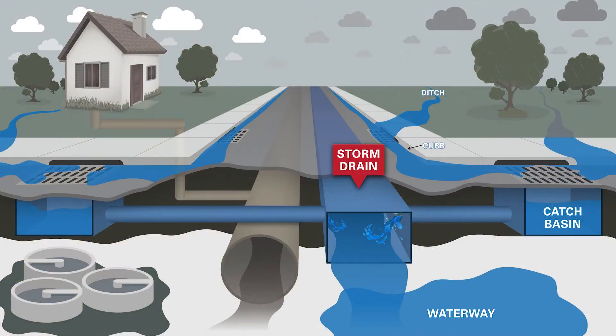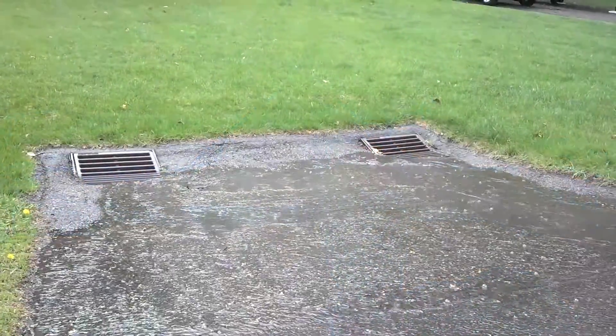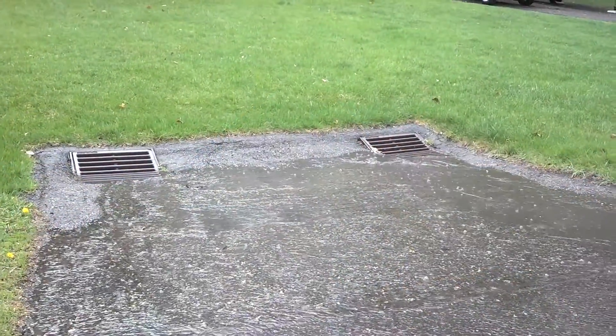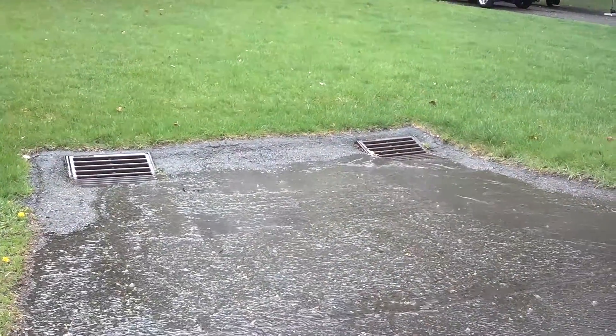We have the storm sewer system. The storm sewer transports rainwater from roads and ditches to a river, lake or pond. The purpose of this system is to prevent flooding during large rainstorms.